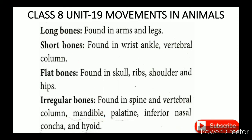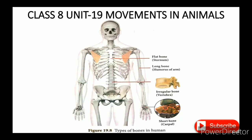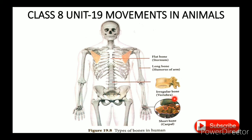Bones are classified into four types: long bones, short bones, flat bones, and irregular bones. Long bones are found in the arms and legs, for example the humerus. Short bones include the carpal bones. Flat bones include the sternum and the shoulder and hip bones. Irregular bones include the vertebrae, found along the back side of the body.